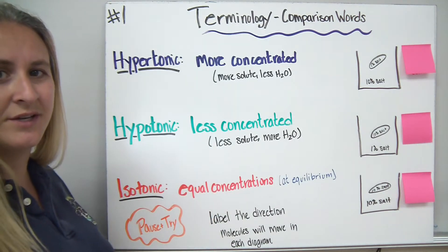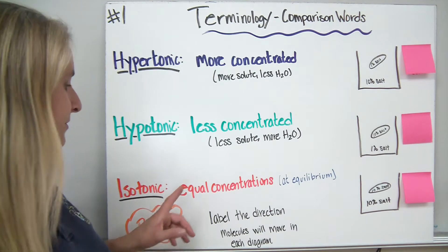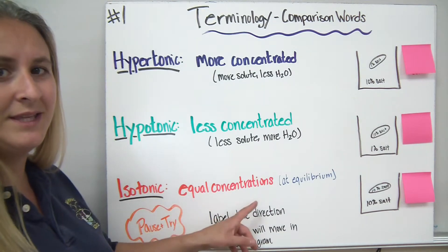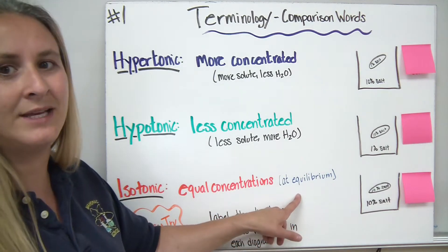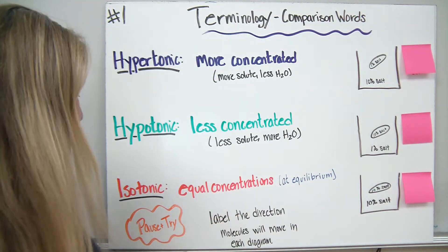Then there's an isotonic solution. Iso means the same or equal, and these would be a solution that would be equal concentrations or we would say it's at equilibrium. Remember that's a similar term.